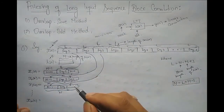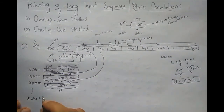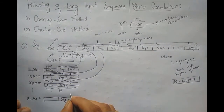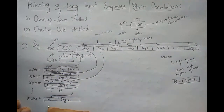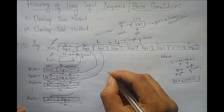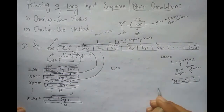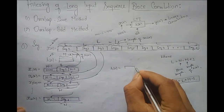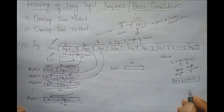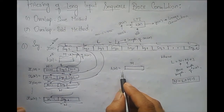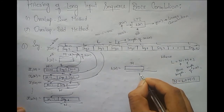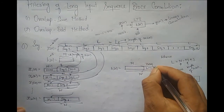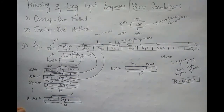Since it is block convolution, all block lengths should be capital N. The last block is also formed similarly with segment L, and the previous M minus 1 samples are copied, giving length capital N. Since I am performing circular convolution, I have to make sure the length of H of N is also equal to capital N. The length of h of n is M, so how many zeros do I need to pad so that H of N has length equal to block length N? I need to pad L minus 1 zeros, so that the total length is capital N.